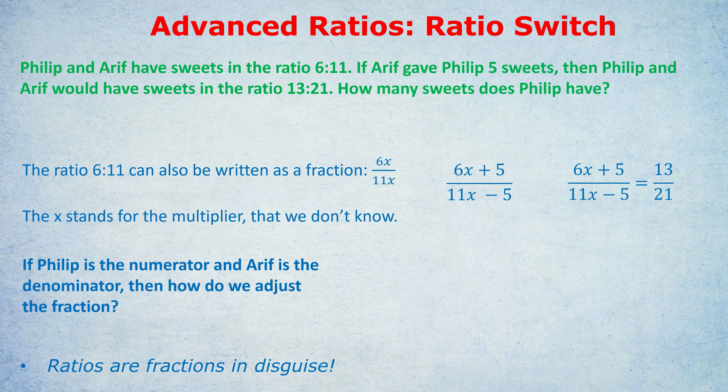So we can simply write 13 over 21. The old ratio, 6x over 11x, after the changes, plus 5 on the top, minus 5 on the bottom, becomes the new ratio slash fraction, 13 over 21. And now we have a lovely equation that we can solve. I'm going to show you how to solve this equation, and that's going to tell us what x is, and once we know what x is, we know what the actual amounts at the beginning were.